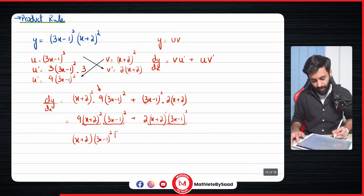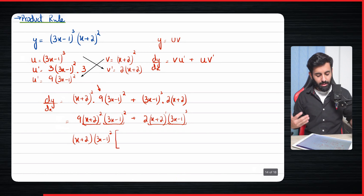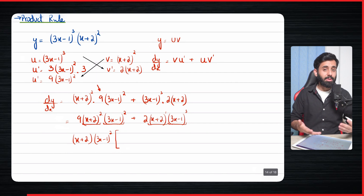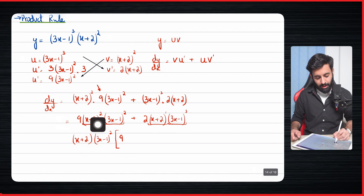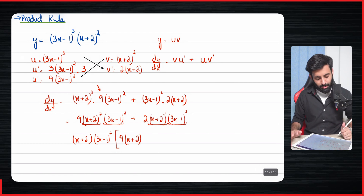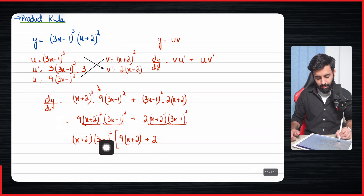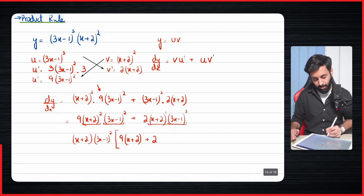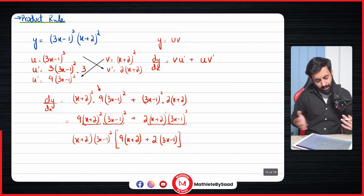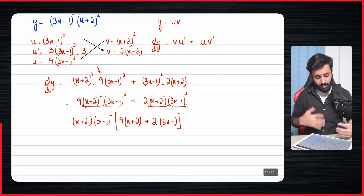Taking both common factors out, we get (x + 2)(3x - 1)² times a square bracket. Inside the bracket, we check what's needed to recover the original expression: from the first term we need 9 times (x + 2), and from the second term we need 2 times (3x - 1). So the factored form is (x + 2)(3x - 1)² · [9(x + 2) + 2(3x - 1)].